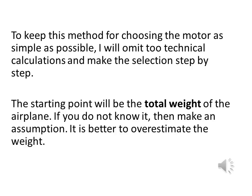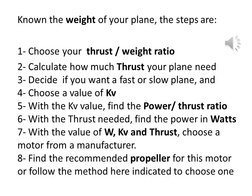To keep this method for choosing the motor as simple as possible, two technical calculations will be omitted and the selection made step by step. The starting point is the total weight of the airplane — if unknown, make an assumption, and it is better to overestimate the weight. Knowing the weight of your plane, the steps are: 1) Choose your thrust-to-weight ratio. 2) Calculate how much thrust your plane needs. 3) Decide if you want a fast or slow plane. 4) Choose a kV value. 5) With the kV value, find the power-to-thrust ratio. 6) With the thrust needed, find the power in watts. 7) With the values of power, kV, and thrust, choose a motor from a manufacturer. 8) Find the recommended propeller for this motor, or follow the method indicated to choose one.